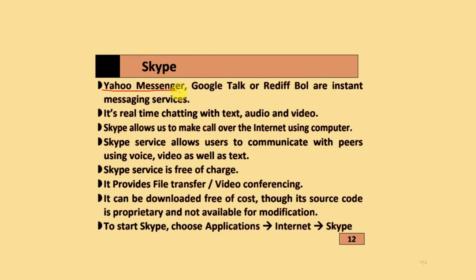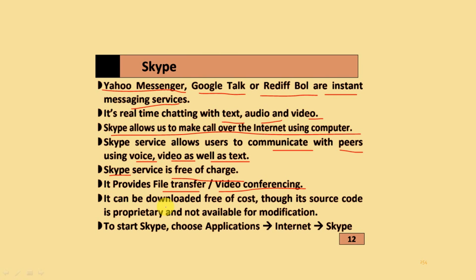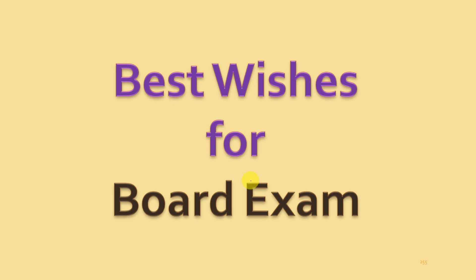The next topic is Skype. Yahoo Messenger, Google Talk, and Rediffbol are instant messaging services. They support real-time chatting with text, audio, and video. Skype allows users to make calls over the internet using a computer. Skype services allow users to communicate with peers using voice, video, and text, and is free of charge. It provides file transfer and video conferencing, and can be downloaded free of cost. However, it is proprietary and its source code is not available for modification. To start Skype in Ubuntu, go to Applications, Internet, and Skype. Best wishes for the board exam.